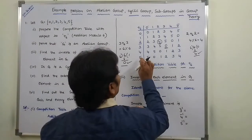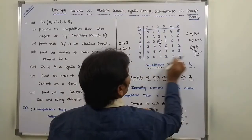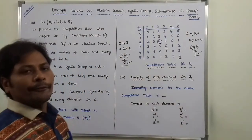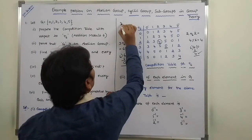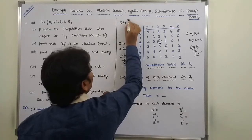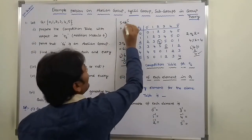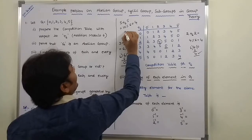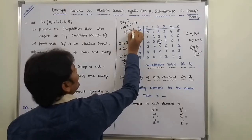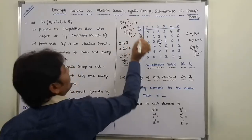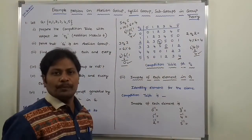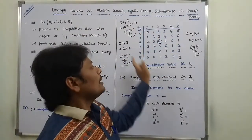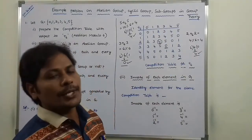Another example: 5 + 5. Row-wise 5 and column-wise 5 gives 4. How? 5 + 5 = 10, and 10 modulo 6: 6 divides 10 with remainder 4. So we write 4. Similarly, 5 + 0 = 5 modulo 6, remainder 5. And 4 + 4 = 8 modulo 6, remainder 2. And 3 + 5 = 8 modulo 6, remainder 2. Using these same examples, we fill the entire composition table.